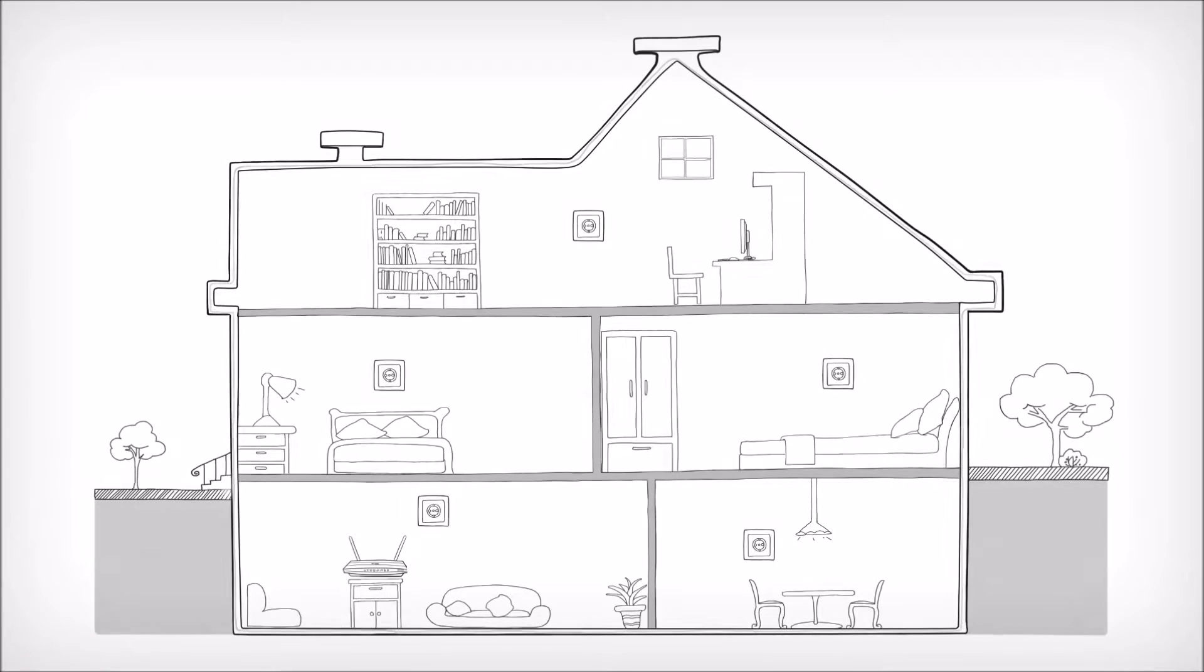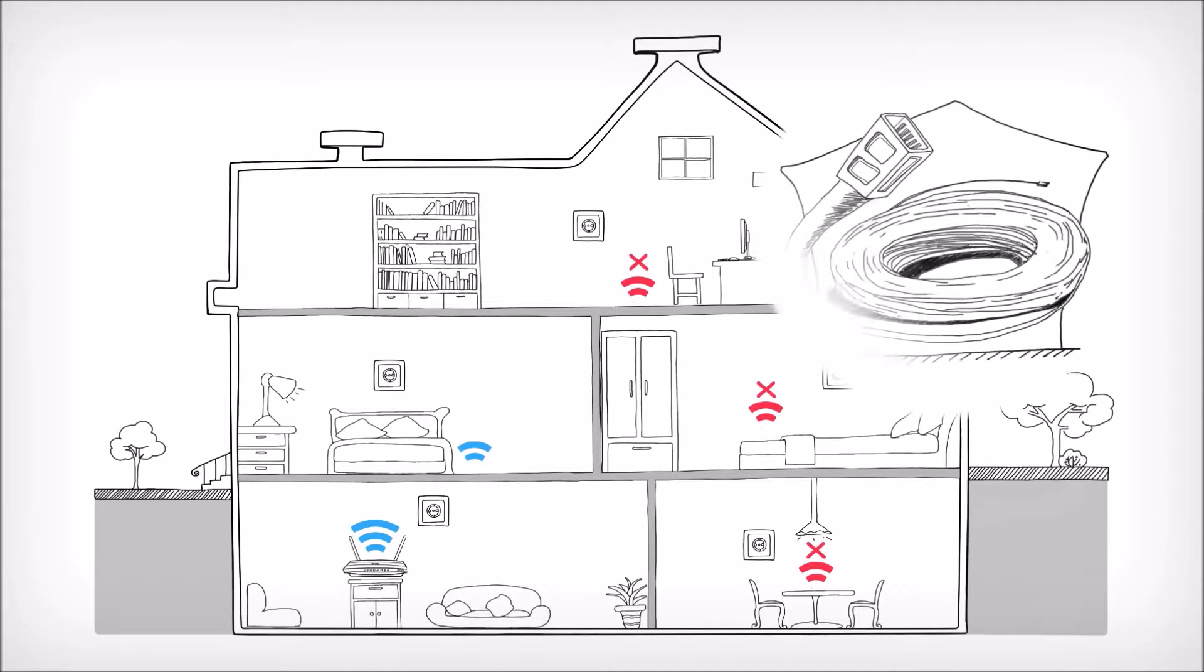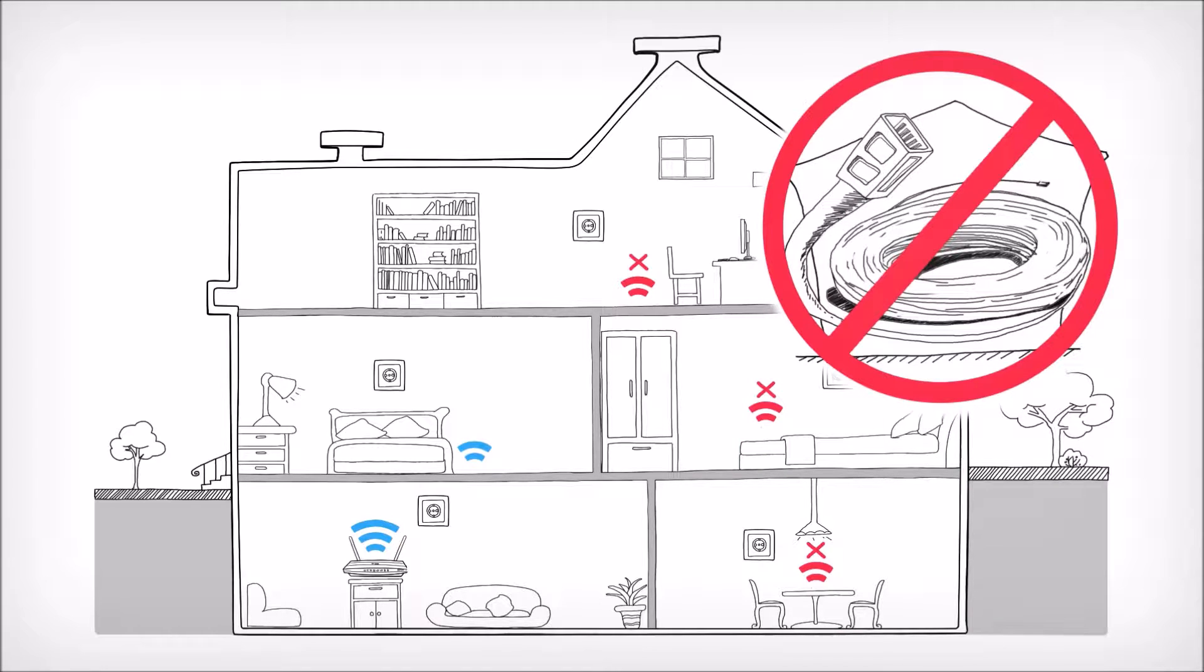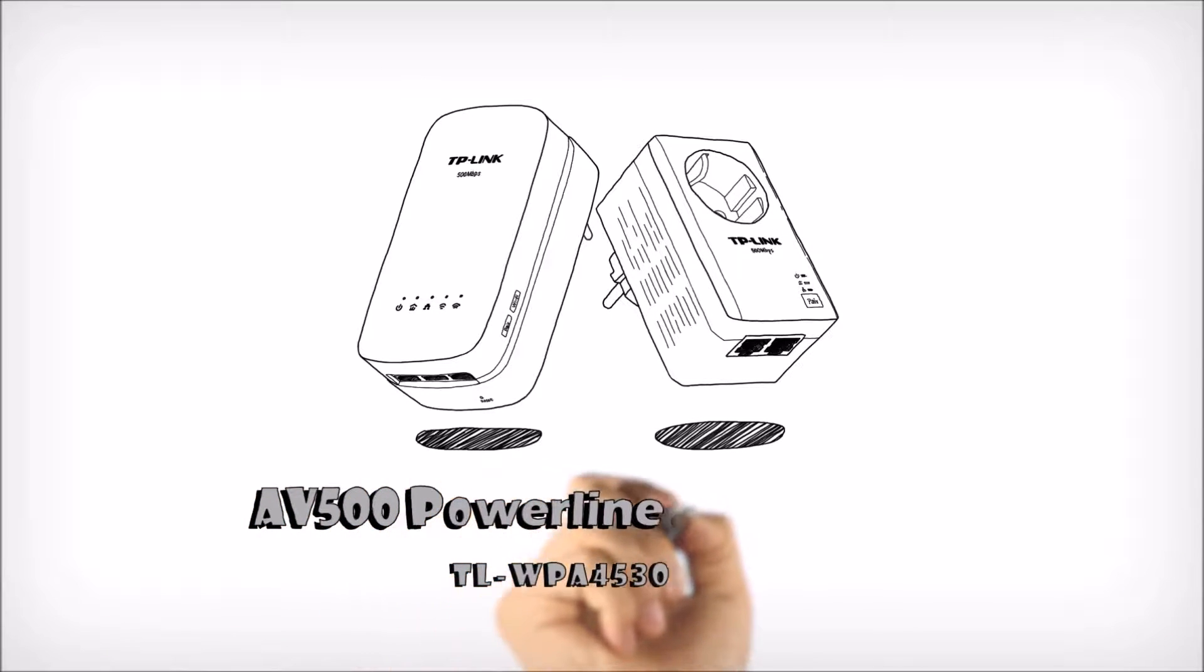Are you tired of spotty WiFi and constant buffering? You don't need to run cables through your entire house to get the performance you need. It just takes a few minutes to plug in the TP-Link AV500 Powerline AC Wi-Fi Kit.